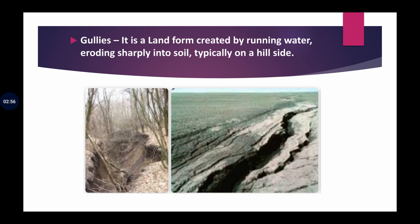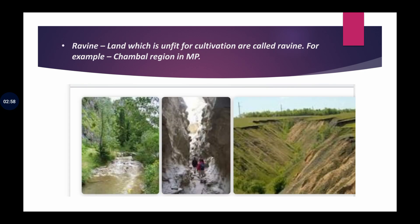Next term is ravines. These are the bad lands in the Chambal region, jo ki Madhya Pradesh mein hai. Bad land ka matlab hai jo zameen cultivation ke liye unfit ho — matlab wahan agriculture nahi kar sakte. Chambal region Madhya Pradesh mein located hai; wahan se jo ravines nikalti hain, woh gullies create karti hain. Jiski wajah se wahan ki soil fertile nahi rehti aur woh area bad land ban jaata hai.